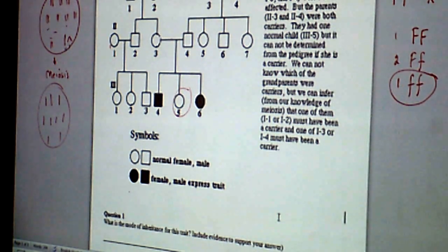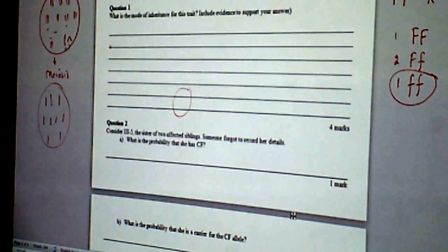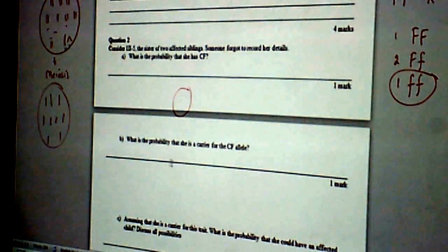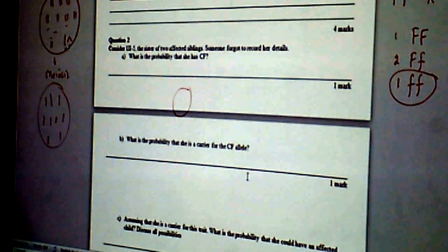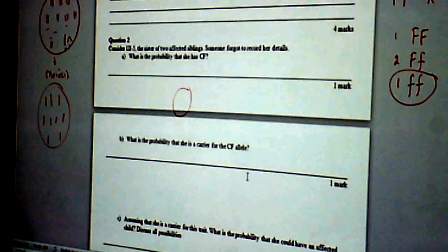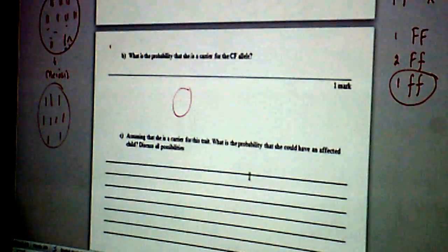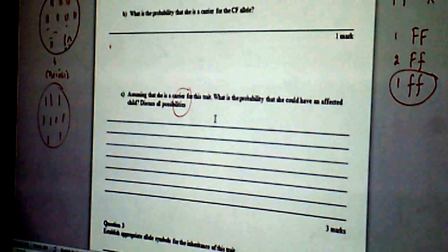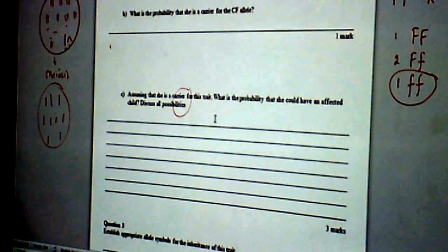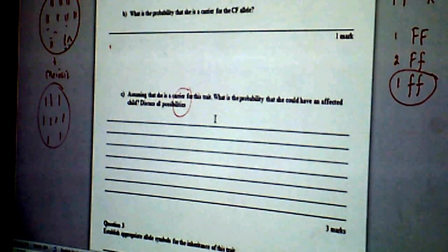Let's look at the next question. What is the probability that she would be a carrier? 50%, yes. Assuming that she's a carrier for this trait. Now we assume that she's a carrier, what is the probability that she could have an affected child?